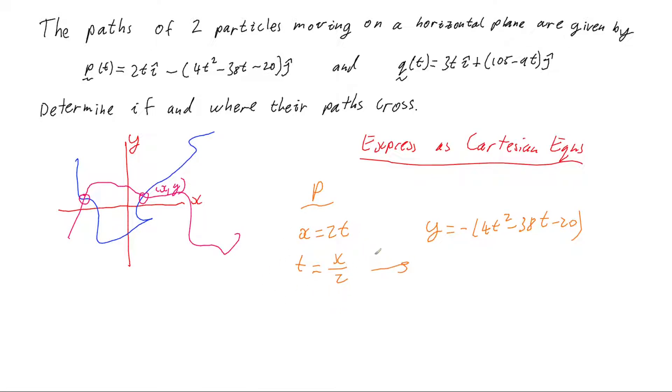And then if we substitute that into the y, we're going to have y equals, and I'll bring the negative in as I do this, I'm going to have positive 20 because negative times negative 20 is positive 20. Then I've got negative of negative 38 so I'm going to have plus 38 times t but t is x on 2. And then I've got negative of 4t squared so I'm going to have negative of x on 2 squared.